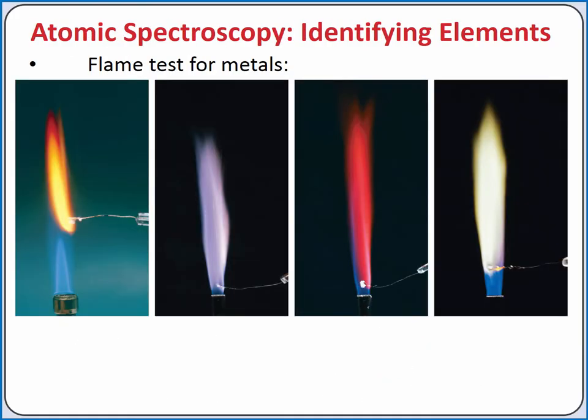Since each element has a unique atomic spectrum, we can use a flame to excite electrons in a metal and observe the color of light that is emitted in order to identify the metal. This is called a flame test for a metal.